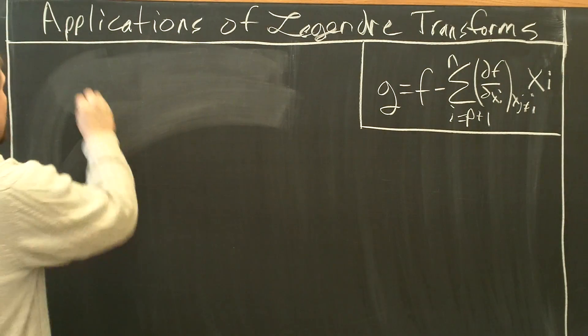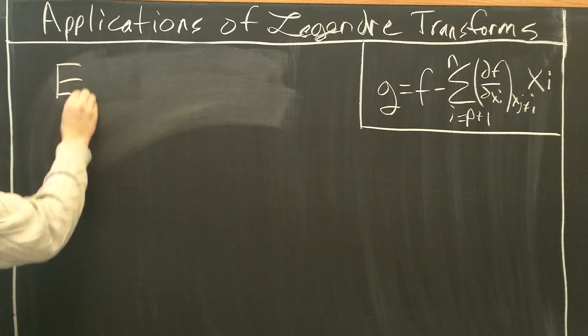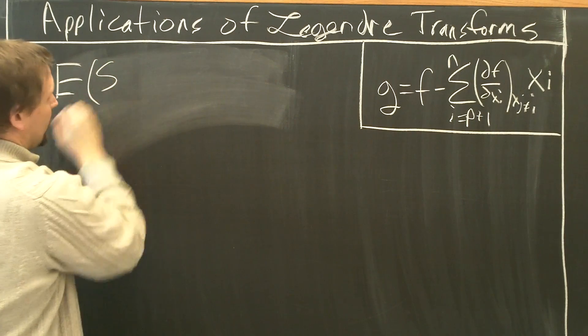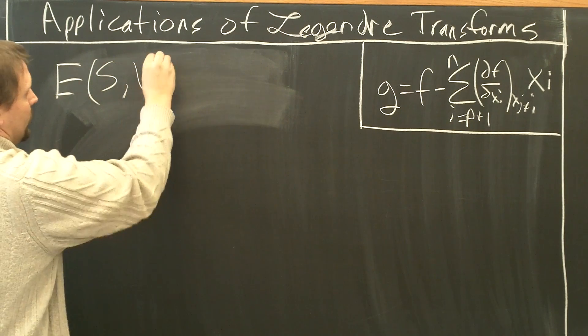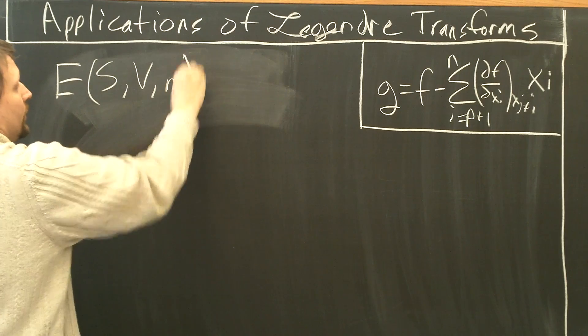Suppose we start with the function energy, which is our function of entropy, volume, and mole number. E is a function of S, V, and N.